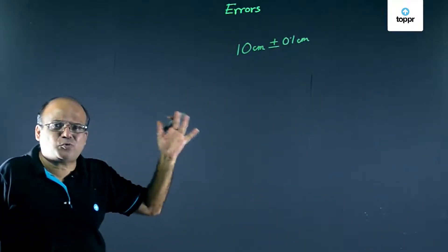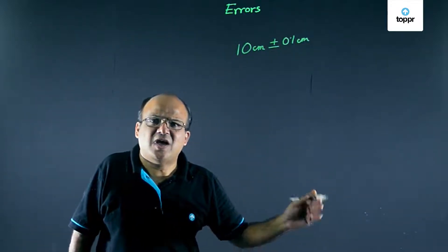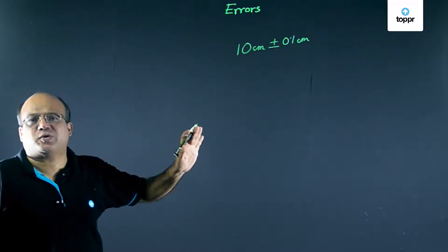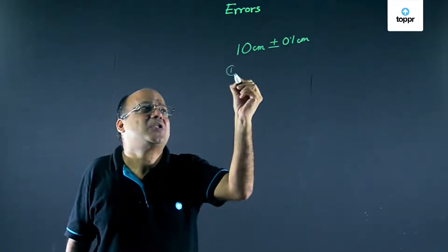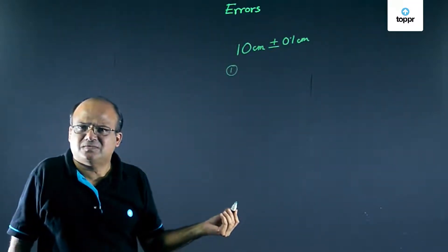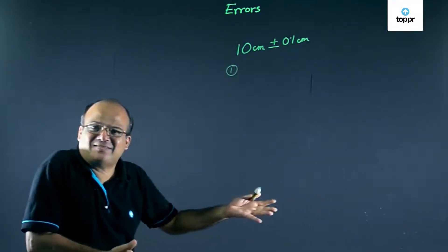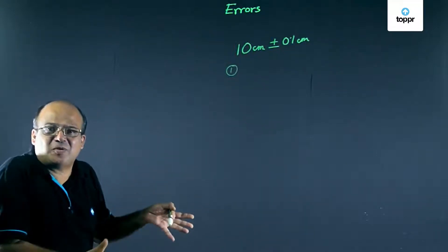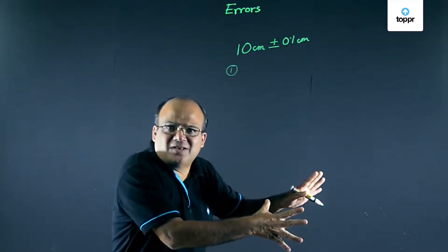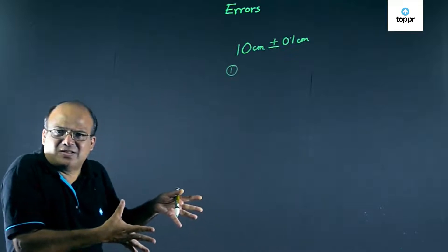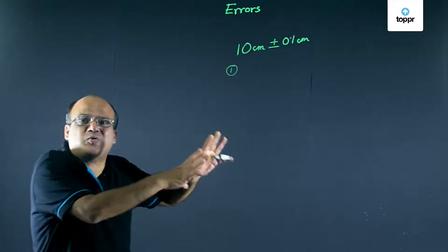Errors can be of two types. The first type is systematic errors, whose causes are known to us. The first kind of systematic error is an erroneous instrument — you know that the instrument is defective. For example, you bought a scale from China and that scale is defective, so any length you measure will not be correct. Some instruments also have zero errors: even when nothing is measured, they don't give a zero reading. That is also an erroneous instrument.